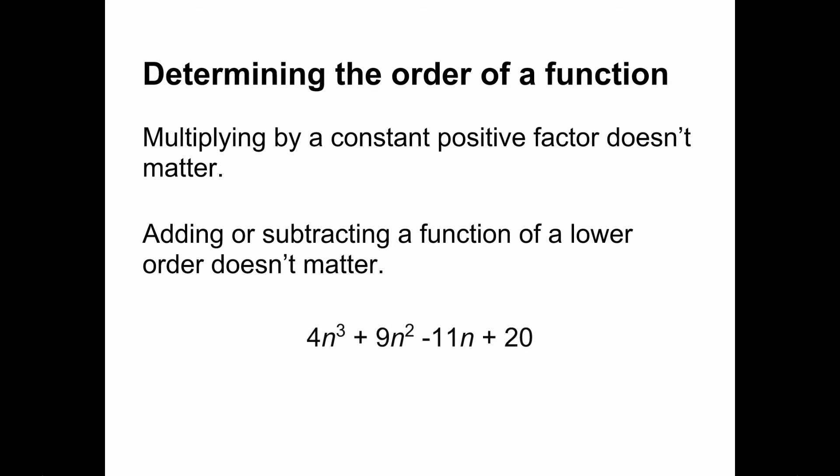Consider this hairy-looking polynomial. The first term, 4n cubed, is in order n cubed, because it's n cubed times a constant. Similarly, 9n squared is in order n squared, 11n is in order n, and 20 is in order 1. The last three terms are all in lower orders, so the whole thing is in order n cubed.